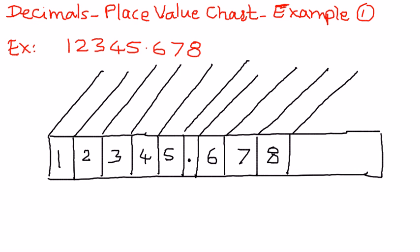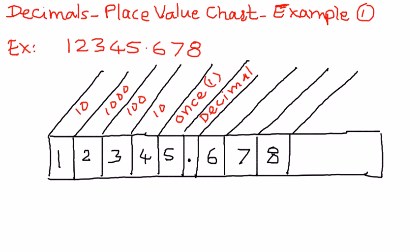Where the decimal place is, we'll represent that as the decimal point. Just to the left of the decimal place, where the 5 is, that is the 1's place. Moving further left, this is the 10's place, this is the 100's place, and this is the 10,000's place. So, on the other side — on the right side of the decimal place —